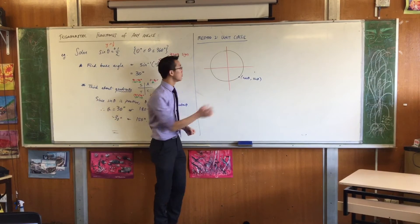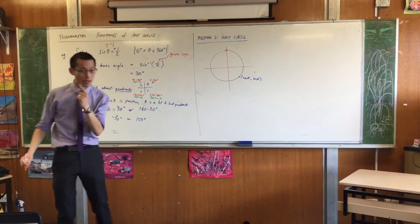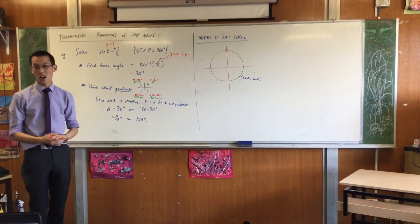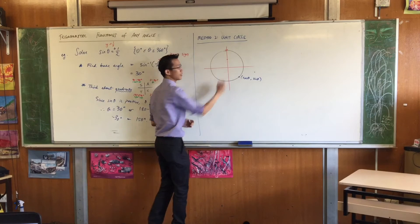Remember this being the unit circle. This top point here is what? It's one. Okay? So therefore, y equals a half should be halfway up to get to there. Somewhere like that.